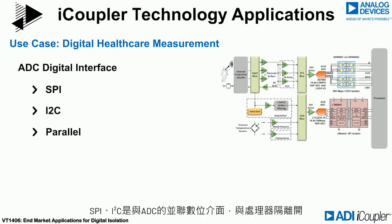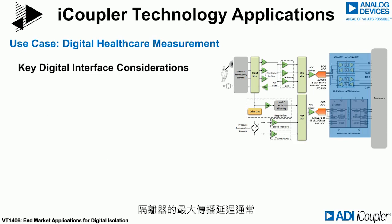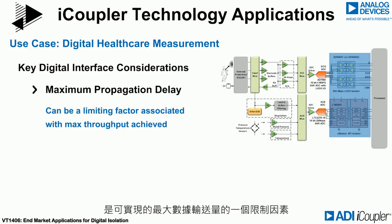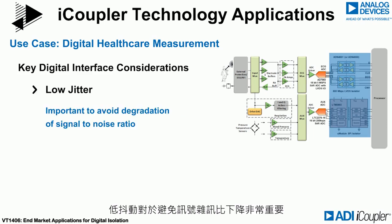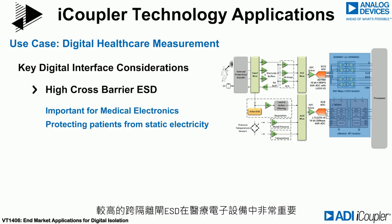SPI, I2C, or the parallel digital interface of an ADC is isolated from the processor. The maximum propagation delay of the isolator is often a limiting factor in the maximum data throughput that can be achieved. Low jitter is important to avoid degradation of the signal-to-noise ratio. EMC compliance in the form of low radiated emissions and high noise immunity is important in many applications. High cross-barrier ESD is important in medical electronics to protect patients from static electricity.